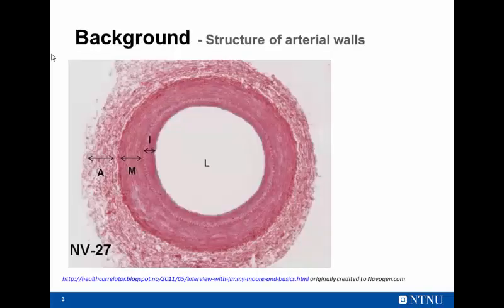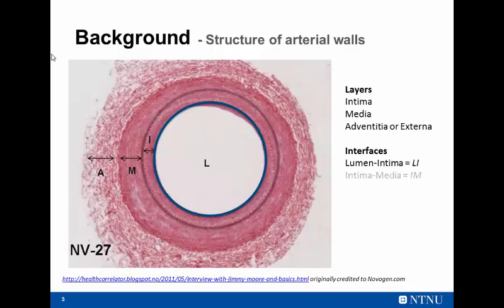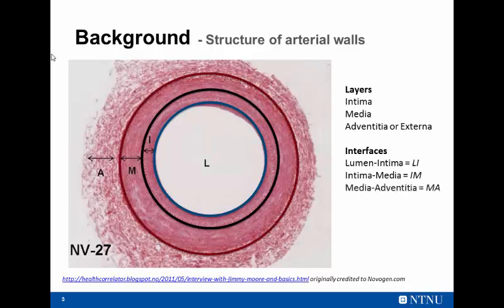I guess most of you know the anatomy of the carotid artery, but just to go through it, we have carotid artery walls with three different layers: the intima, the media, and the adventitia. So we end up with three interfaces: the lumen-intima interface, which is the innermost, the intima-media interface, and then the media-adventitia interface.